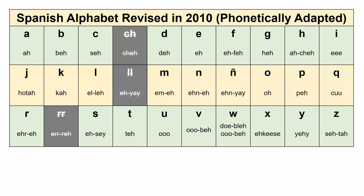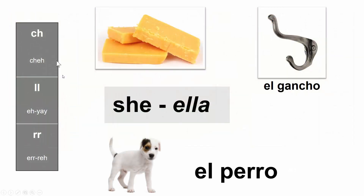Now, I skipped over these grayed-out characters for a reason — they have an interesting story. They used to be part of the Spanish alphabet, but they were removed by the governing body of the Spanish language, the Real Academia, because they thought it would just be simpler to have only single-lettered characters. If ever the case where the C and the H, for example, were to be combined, then it would just be a grammar rule that they'd be pronounced differently.